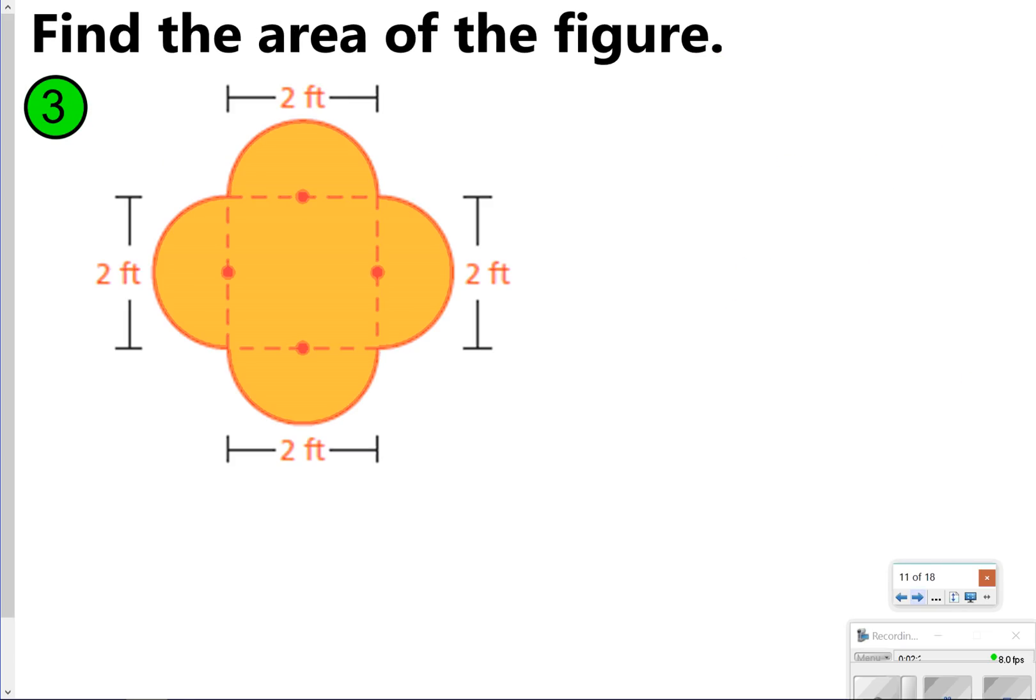Next up, we have kind of a different figure. Just notice that you've got a square in the middle, but then you have four semicircles, and think about four semicircles are going to make two whole circles, so just keep that in mind when you're finding the area. Go ahead and pause now to try the question. Once you're done, click play to check your work.